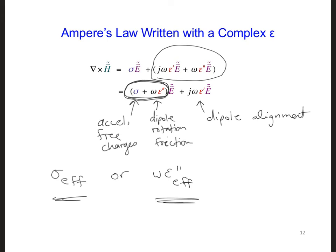From now on, either a value for sigma or for epsilon double prime will be given for a material, and we can assume whichever one is given is an effective value that takes into account all the losses. So you're not going to see the EFF subscript anymore; you can assume whatever you are given is an effective value.